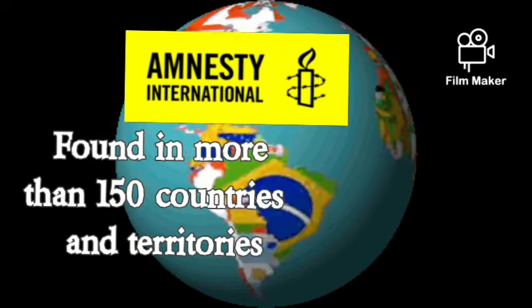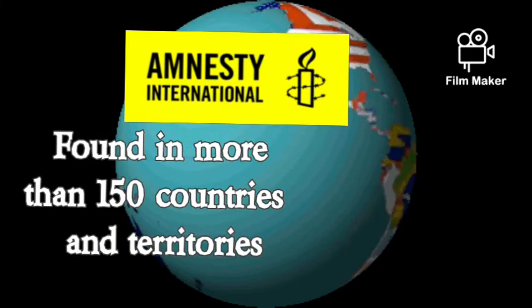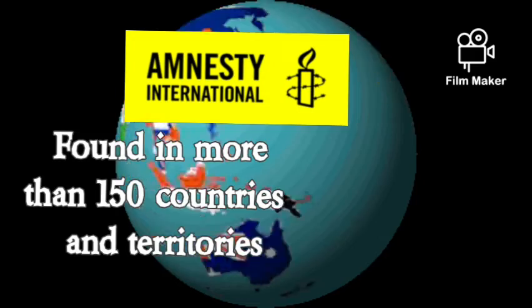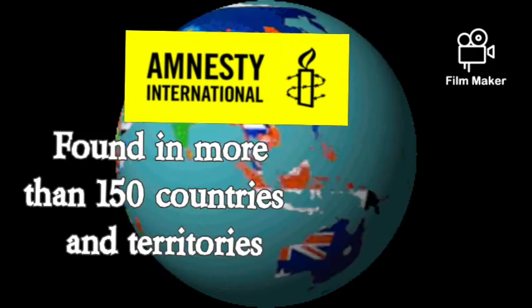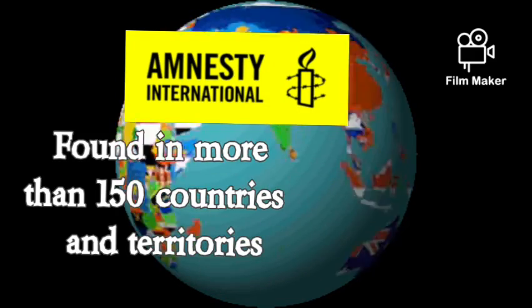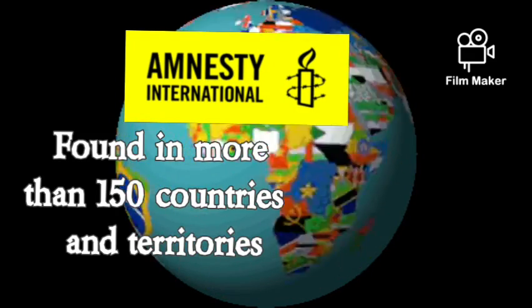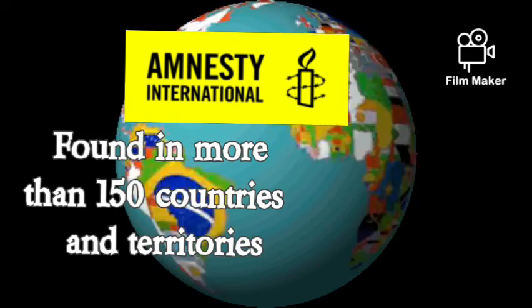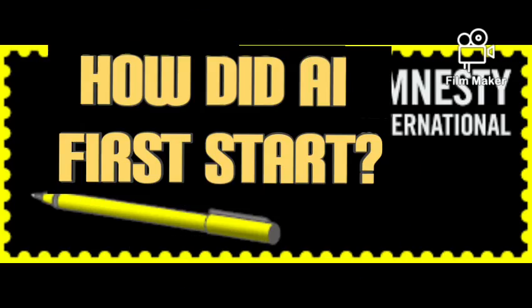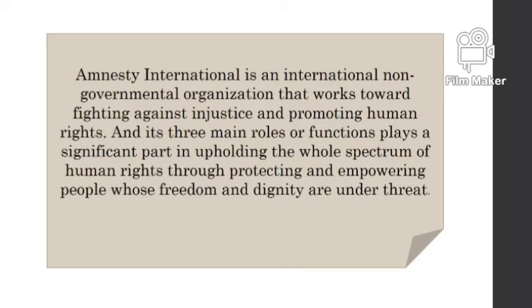According to the Amnesty International website 2022, AI is found in more than 150 countries and territories around the world, and it is united by their determination to work for human rights. How did AI first start? The organization was founded through the effort of